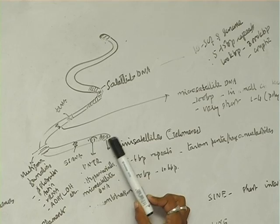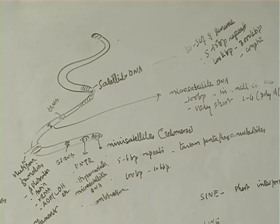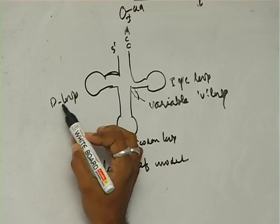have telomeres at the ends, and then hypervariable regions here, and there is a secondary constriction. And the D represents